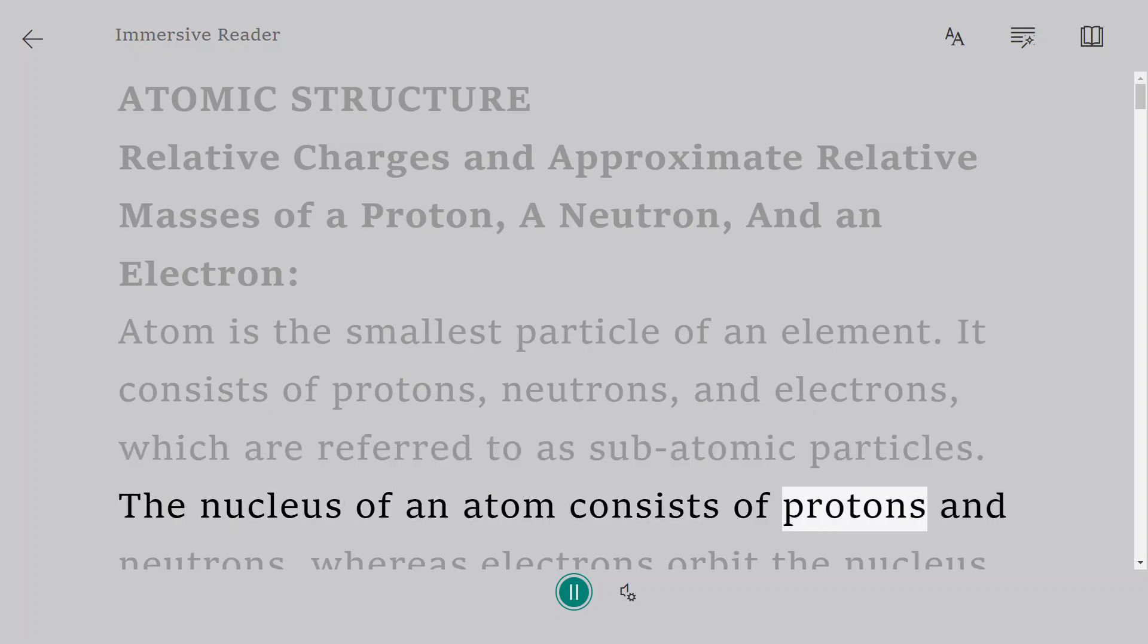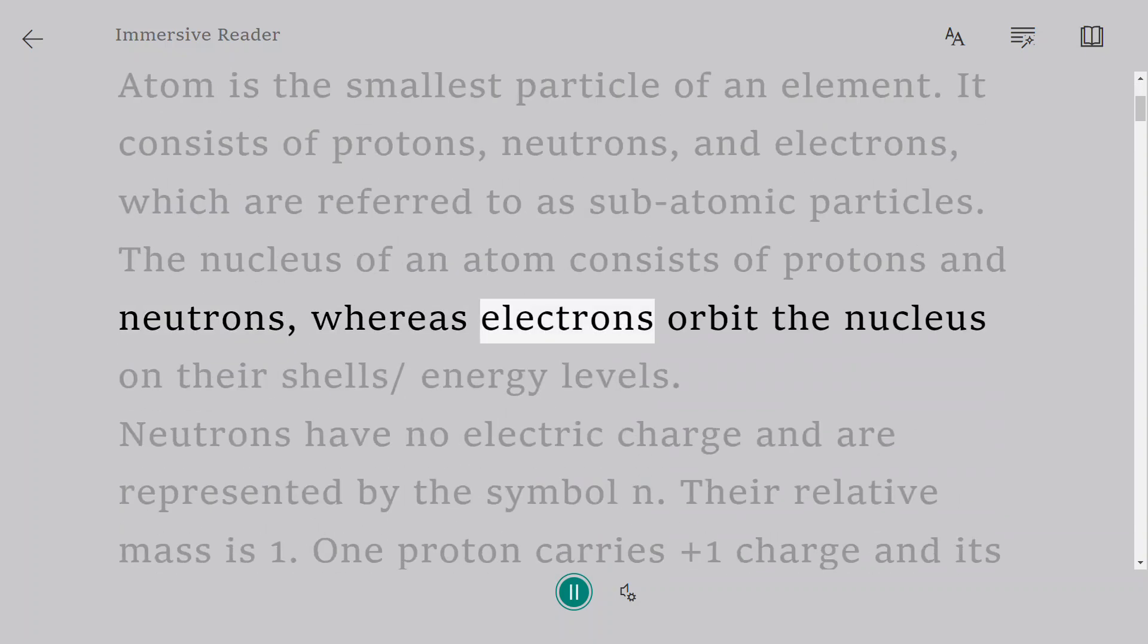The nucleus of an atom consists of protons and neutrons, whereas electrons orbit the nucleus on their shell/energy levels.